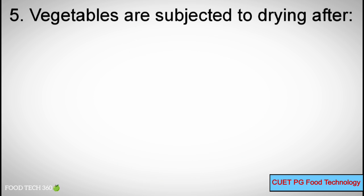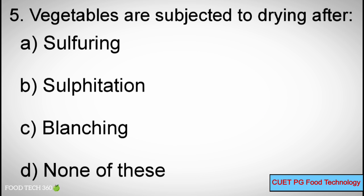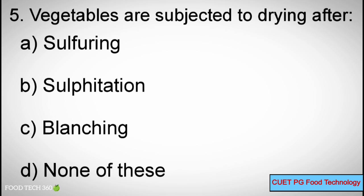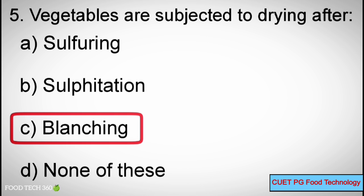Q5: Vegetables are subjected to drying after which process? A. Sulfuring, B. Sulfidation, C. Blanching, D. None of these. Correct answer: C. Blanching.